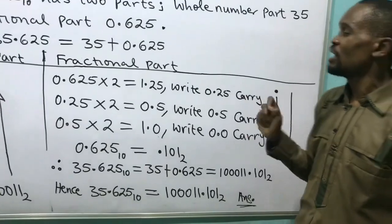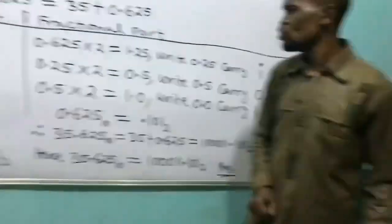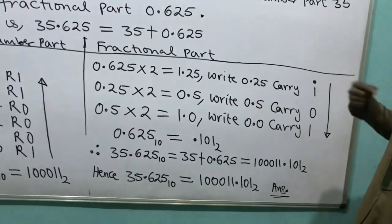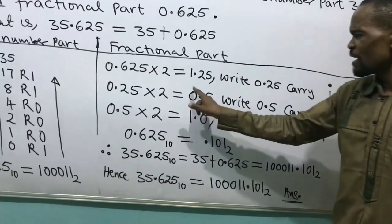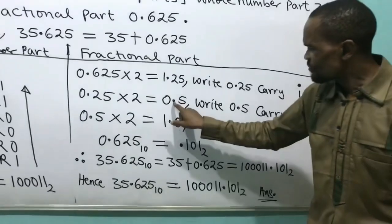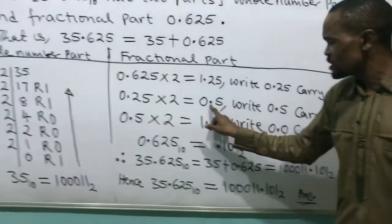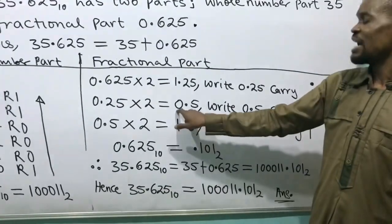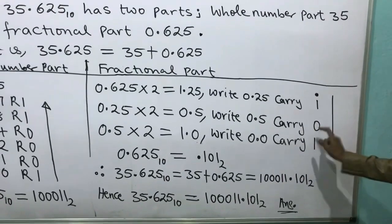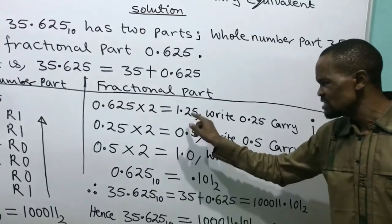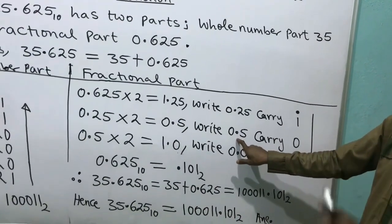Then I carry my fractional part 0.25 to multiply by 2 again. 0.25 multiplied by 2 gives 0.5. My whole number part here is 0 — because after the decimal point, what I see is 0. I carry my 0, write it down, and my fractional part remaining after the multiplication is 0.5.